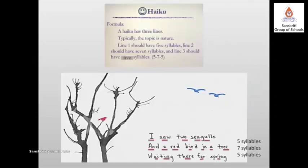A haiku is a Japanese style of writing poetry consisting of three unrhymed lines. The first line has five syllables, the second line has seven, and the third line again has five syllables. What is a syllable? A part of a word that contains a single vowel sound. For example, in the word 'papa' we have two syllables. In a haiku, we have five, seven, and five syllables in lines one, two, and three.